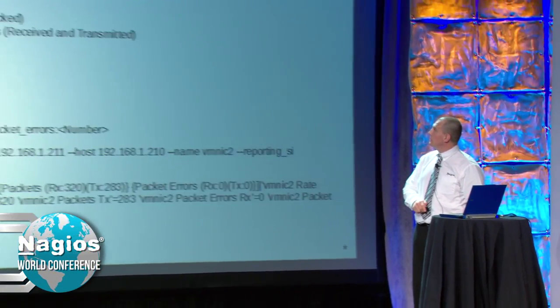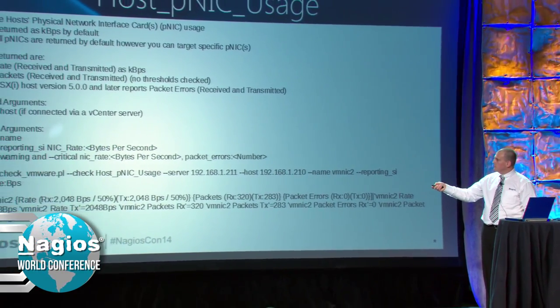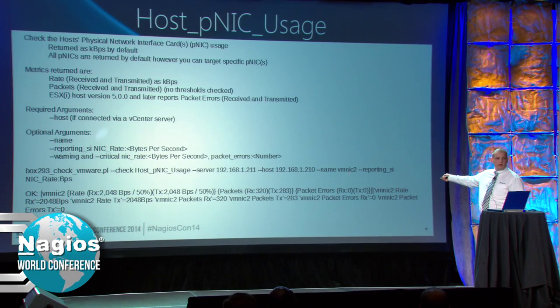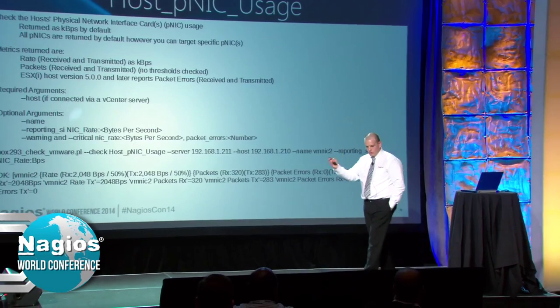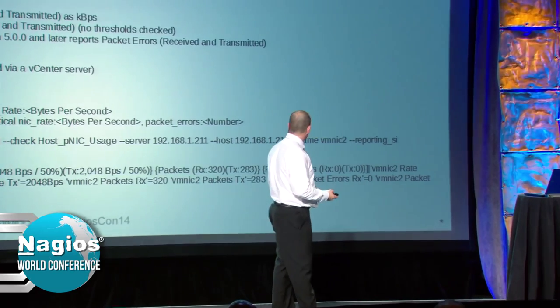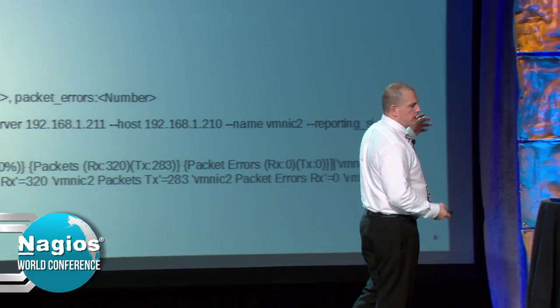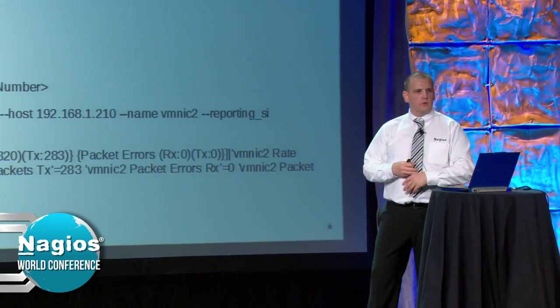Question: earlier you were talking about watching the NICs on the host. You showed an example where only one was connected and two were down. Is there a way to exclude a particular NIC? When you use the name parameter, you can target VMNIC2, VMNIC3, VMNIC6 - specific ones. By default it will get all the NICs. But in some servers there are 16 NICs and you don't want all that information. So the name argument is there so you can group them the way you want and only get the information you want.